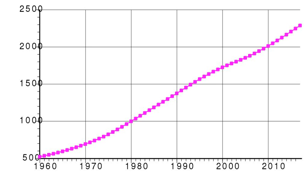Languages spoken in Botswana include Setswana 77.3%, Sekalanga 7.4%, Sekalagadi, Sekgalagadi 3.4%, English 2.8%, Zezuru/Shona 2%, Sesarwa 1.7%, Sembukushu 1.6%, Ndebele 1%, and other 2.8%.